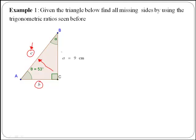So now we know the value of theta, which is 53 degrees, therefore we need to find a trigonometric ratio that is relating the known values, as is theta equal to 53 and also a equal to 9, with the value we are trying to find out, which is the value of c.